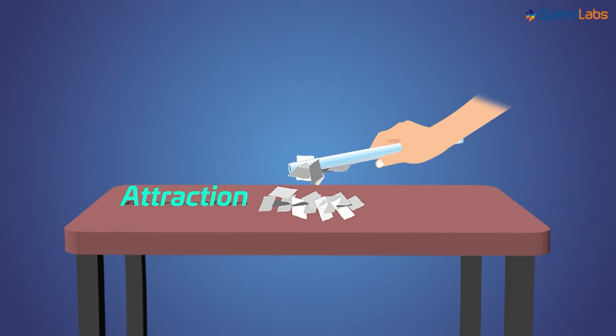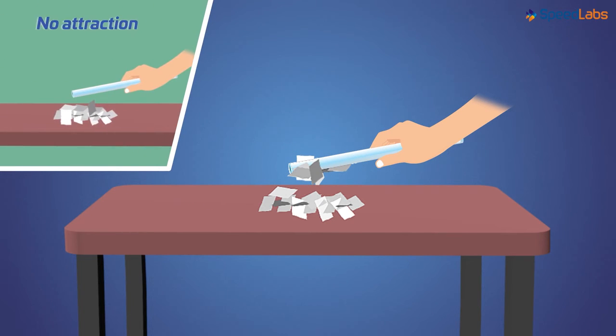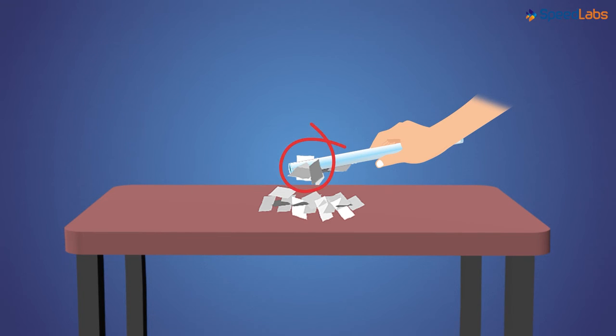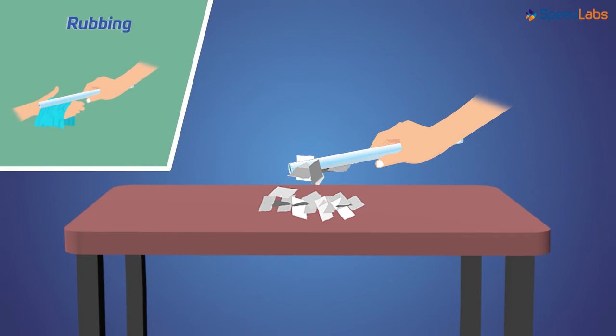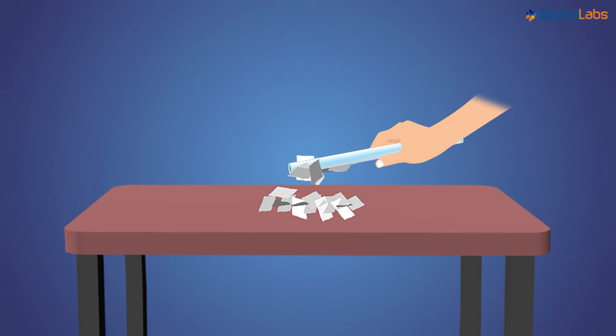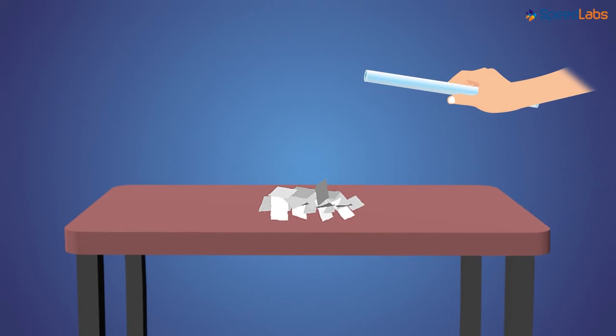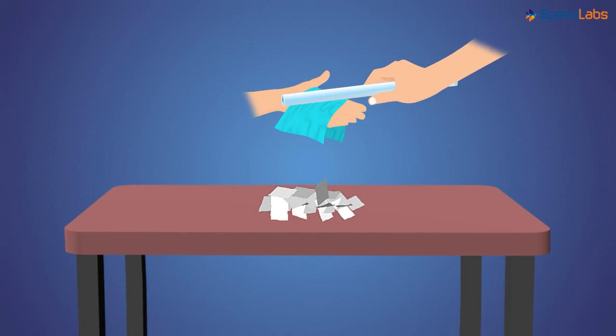Why does this happen? Why is there attraction between the glass rod and the pieces of paper? Initially there was no attraction between the two. Well, this attraction only came about after we rubbed the glass rod with silk. So something must have happened to the glass rod after rubbing. We say that the glass rod became charged after rubbing.